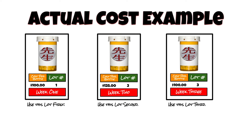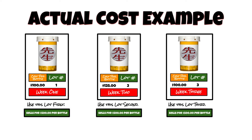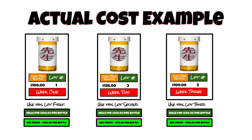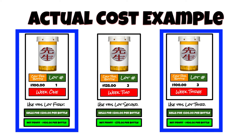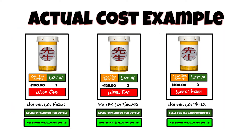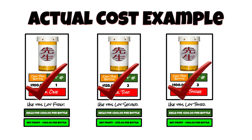Now, let's say that the orders are sold for $500 a bottle without any regard for the cost of each lot. As you can see, the profit in week one and three will be higher than week two. Since they use the oldest materials first and the first order is used, then the second and finally the third.